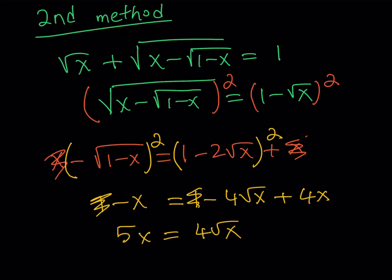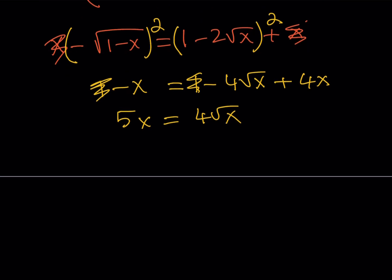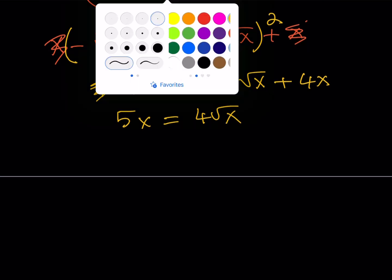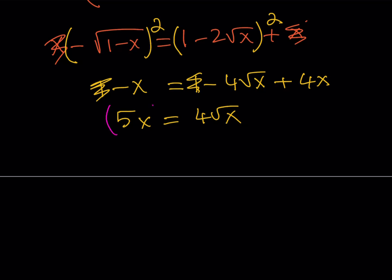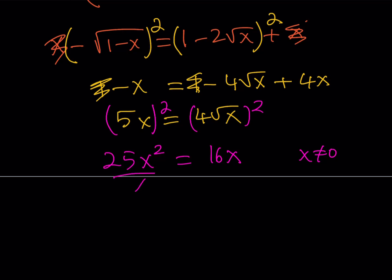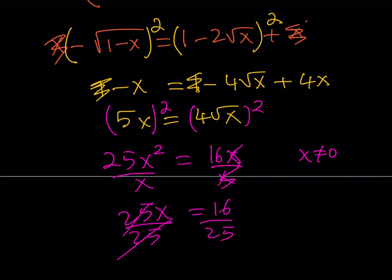This brings us to the same point as before. Squaring both sides again gives 25x² equals 16x. Since x does not equal 0, we divide both sides by x, giving 25x equals 16. Dividing by 25 gives x equals 16 over 25.